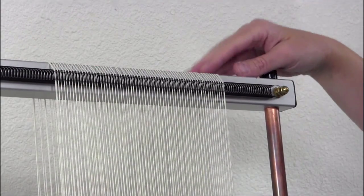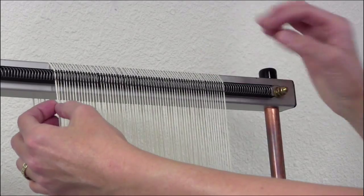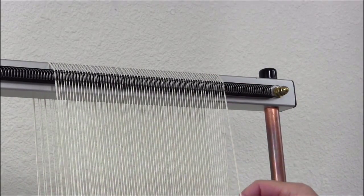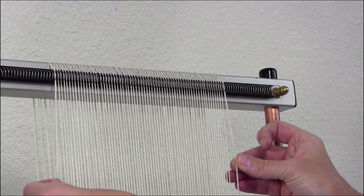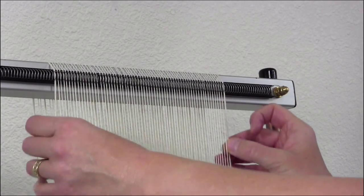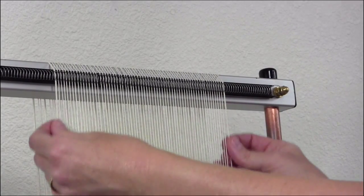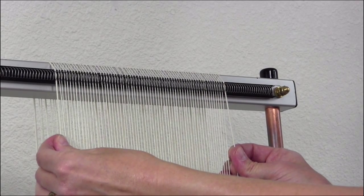One other thing that I like to do is to double the salvage warps. I've always done this on all my tapestries, and it's not mandatory. But it is nice to have a doubled salvage warp there to give you a little extra firmness on the sides of your tapestry.